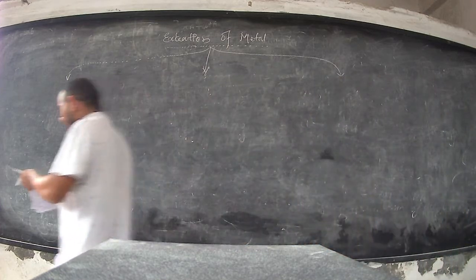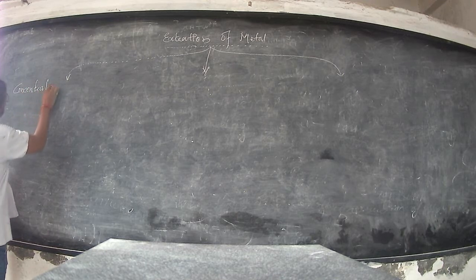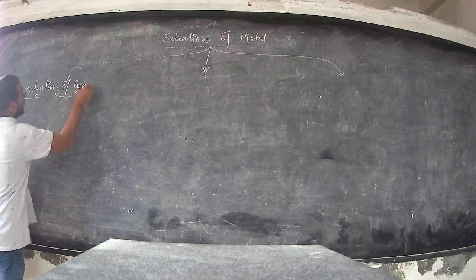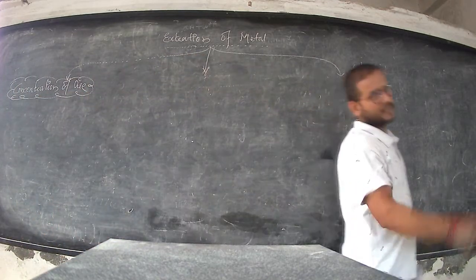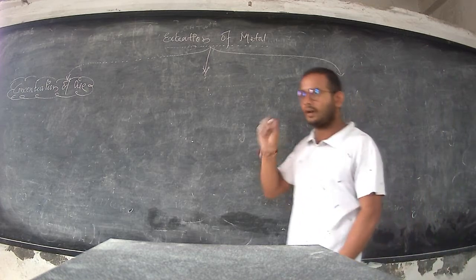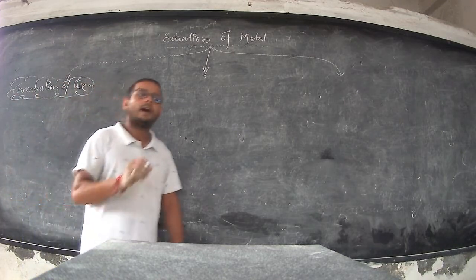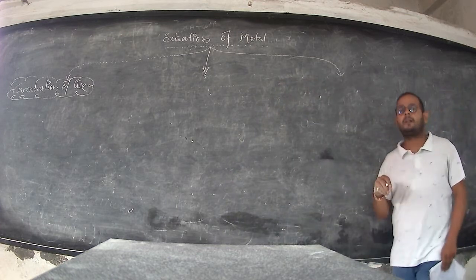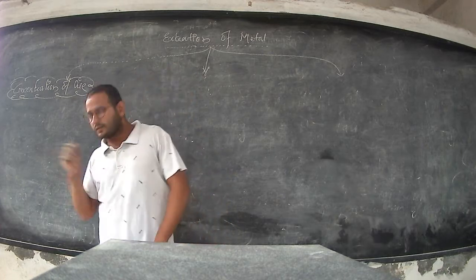The first step is concentration of ore. Concentration of ore means: where are we going to find ore? In nature, in the earth. If we find ore in the earth, it will contain earthy particles like soil, sand, minerals, and dust.